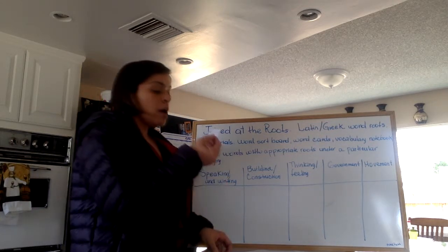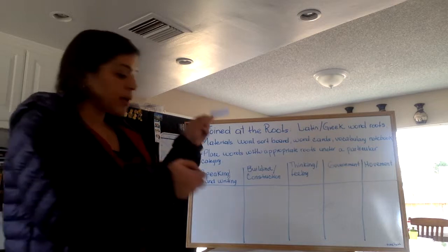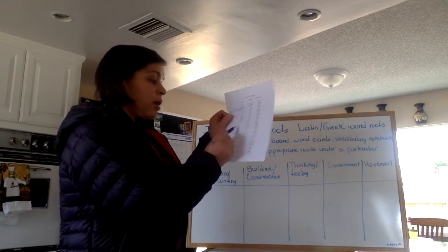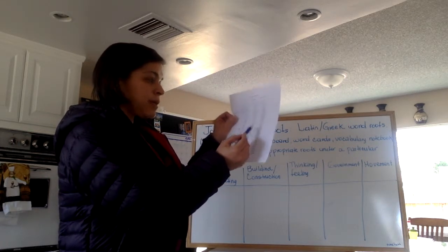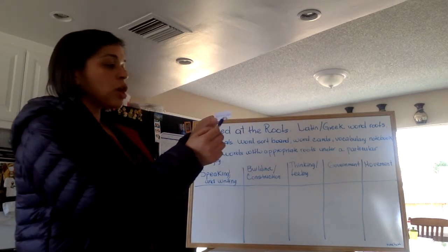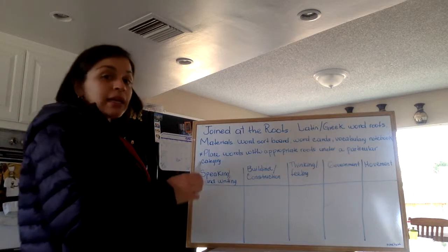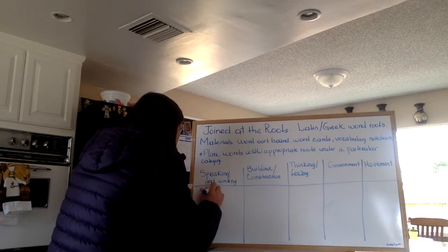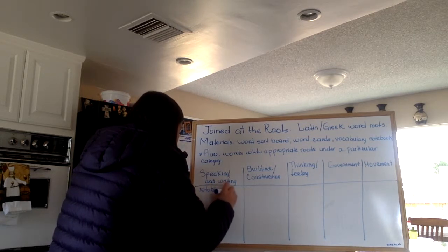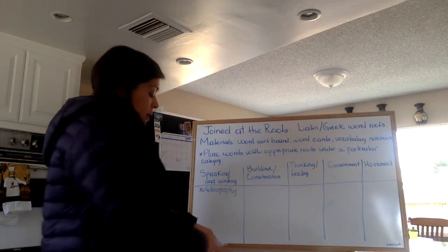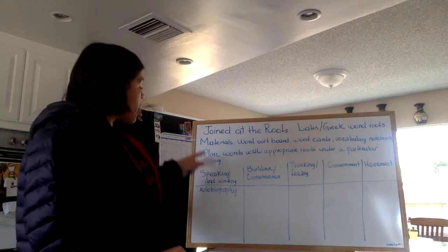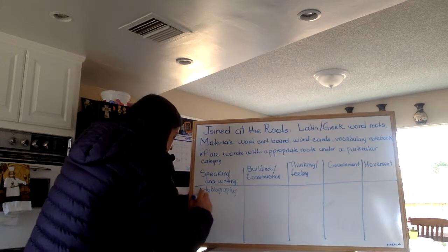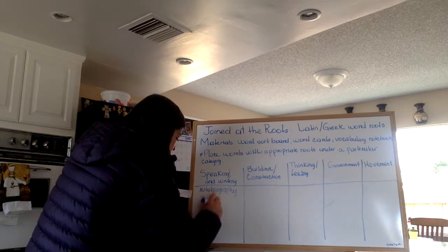I would select a word — my word here is 'autobiography.' I would go here and determine the meaning of the root 'graph,' and the meaning is 'write.' So 'autobiography' would fall within the speaking and writing category, and I would write down my word there. I have another word, 'autograph,' which falls within the same root 'graph,' so I would continue to add it to this category.